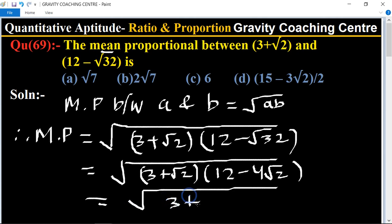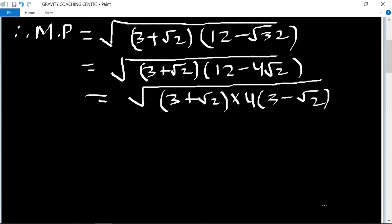3 plus root 2 into 4 times 3 minus root 2. The root of 4 is 2, so we get 2 root 2, and we use the identity